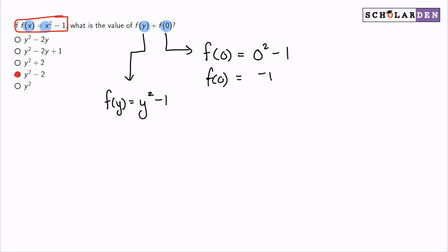So since our goal here is to add these two together, I will then add these two together. And so y squared minus one, plus negative one, which is the same thing as saying minus one, we will have y squared minus two.